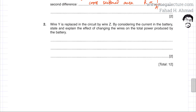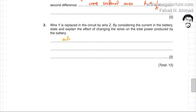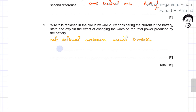In summary: replacing wire Y with wire Z reduces the net external parallel resistance, which increases the current in the battery. Since the EMF is constant and power equals current × voltage, the total power output of the battery increases.